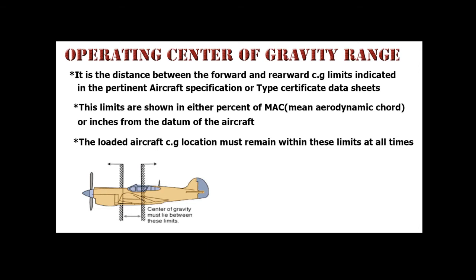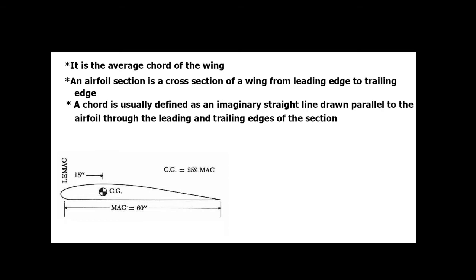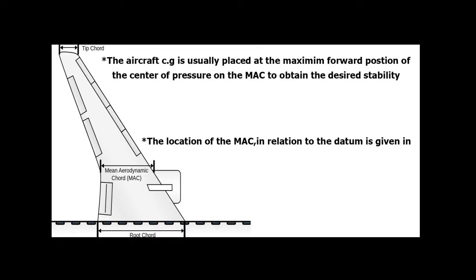The CG limits are shown in either percent of MAC (mean aerodynamic chord) or inches from the datum of the aircraft. The loaded aircraft CG location must remain within these limits at all times. Mean Aerodynamic Chord (MAC) is the average chord of the wing. An airfoil section is a cross section of a wing from leading to trailing edge, and a chord is an imaginary straight line drawn from the leading to trailing edge. The aircraft CG is usually placed at the maximum forward position at the center of pressure on the MAC to obtain the desired stability.